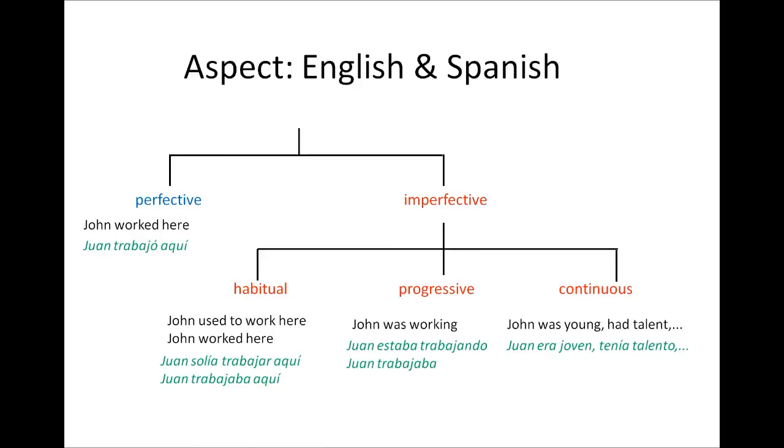By looking at this last category, you can see why most grammar books use the example of the background to describe the situations where the imperfect would be required. So to continue with the example of Juan: Juan era joven, Juan tenía talento, Juan tenía mucha ambición. Vivía en un pueblecito de la provincia de Huelva, pero se mudó a Madrid. John had talent and ambitions; he was young and he went to London. So using the imperfect, I expressed the things that are part of his personality or circumstances, using the continuous aspect.